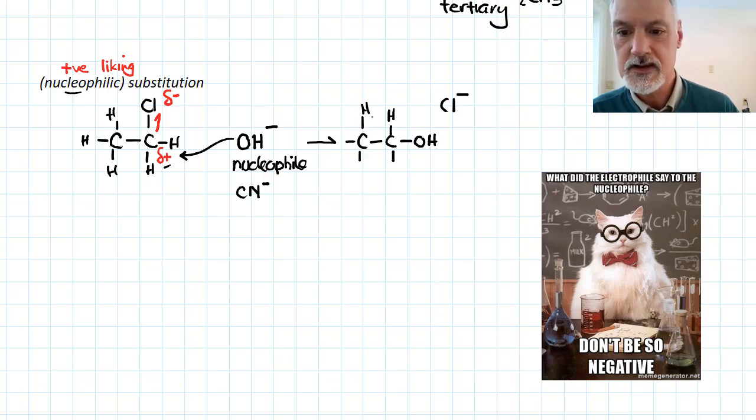and the OH is now attached to it. So I would get two products, an alcohol, if I'm using OH, and I get this chloride ion.